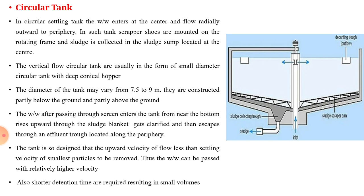Based on the shape of the tanks, it is classified as circular, rectangular, and hopper type. In the circular tank, the wastewater enters at the center and flows radially outward to the periphery. In such tanks, scraper shoes are mounted on the rotating frame and sludge is collected in the sludge sump located at the center. The vertical flow circular tanks are usually in the form of small diameter circular tanks with deep conical hopper. The diameter of the tank may vary from 7.5 to 9 meters. They are constructed partly below the ground and partly above the ground. The wastewater after passing through the screen enters the tank from near the bottom,